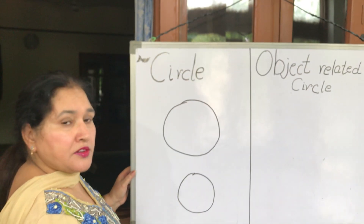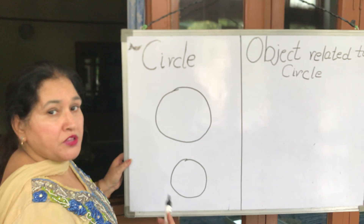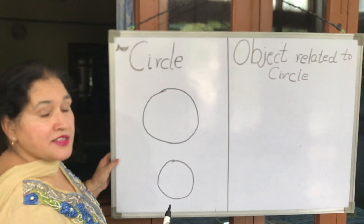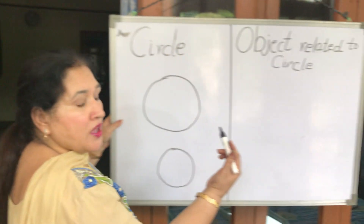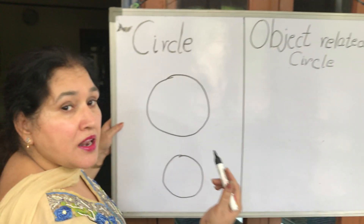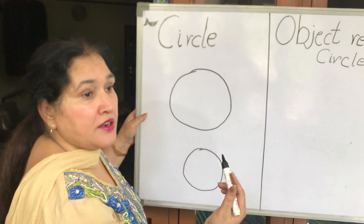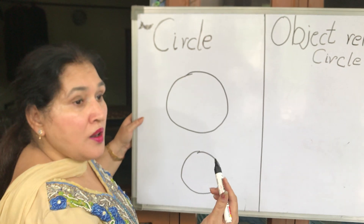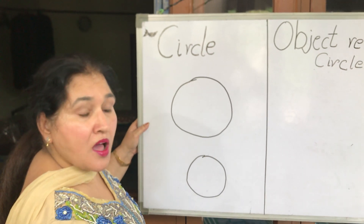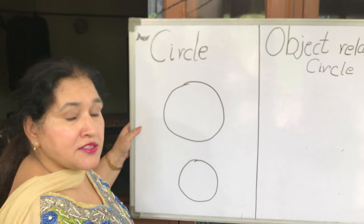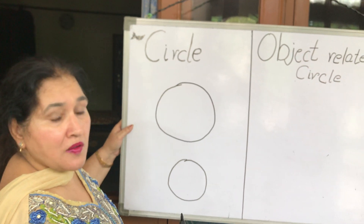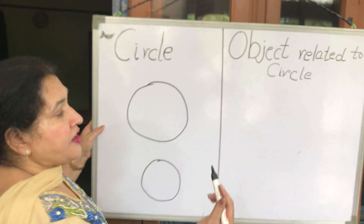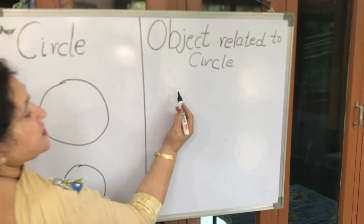Now we will draw some objects which have a circular shape. Just look here — like sun and ball, pizza, clock. So many things are there. This shape is circular. So we will try first.